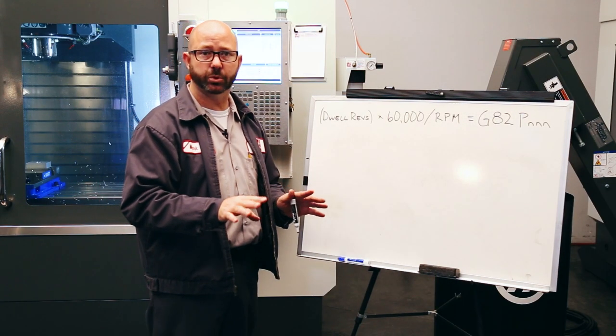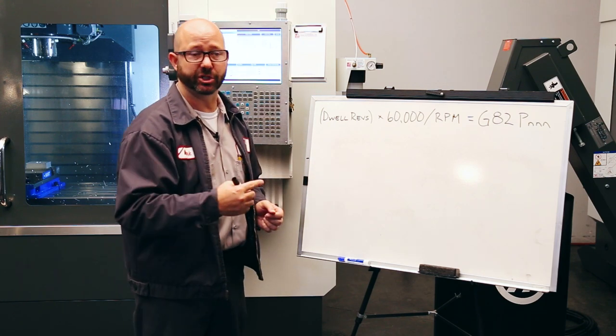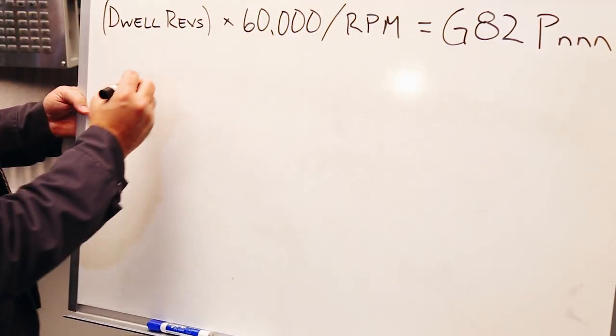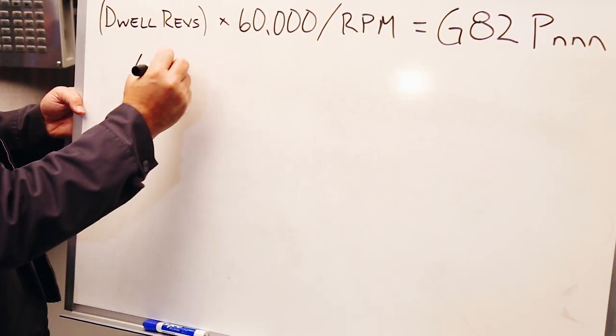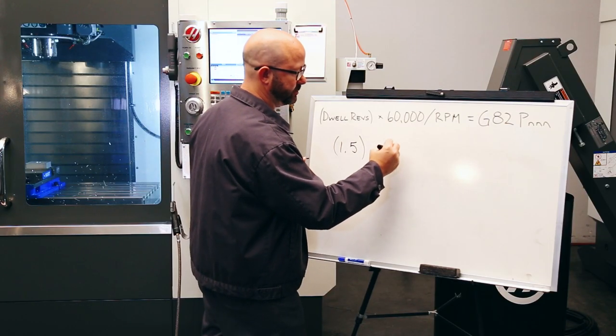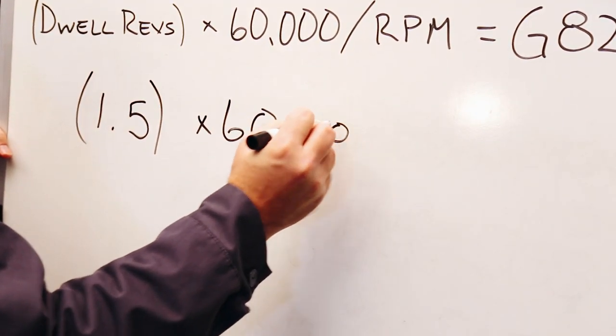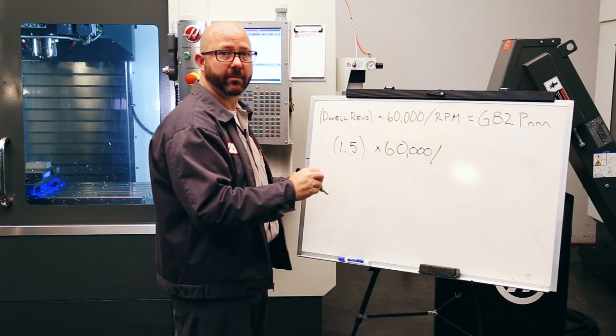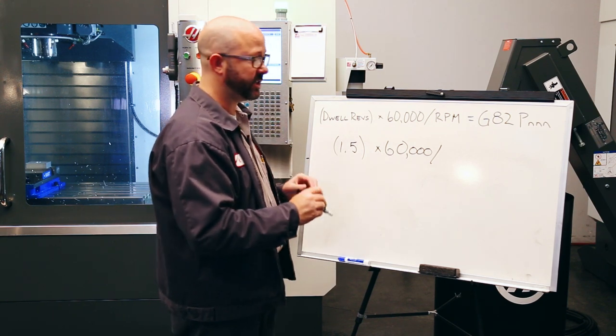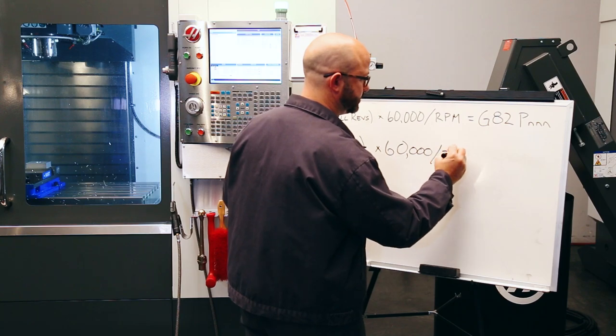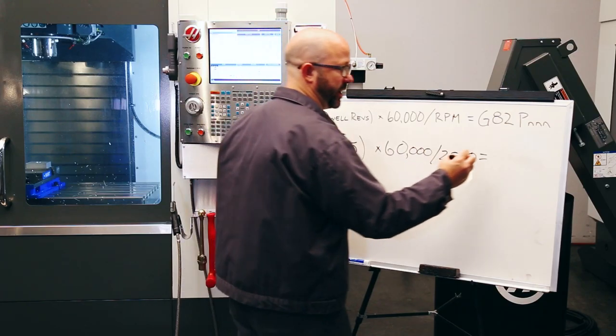Now for our port contour tool, I wanna go with a one and a half revolution dwell. So I'm gonna put in 1.5 into our formula. I'm gonna carry down this 60,000. That's just our conversion factor. My RPM on my port contour tool is 2,000 RPMs. That's S2000. So if we did the math, this would give us an answer here of 45.